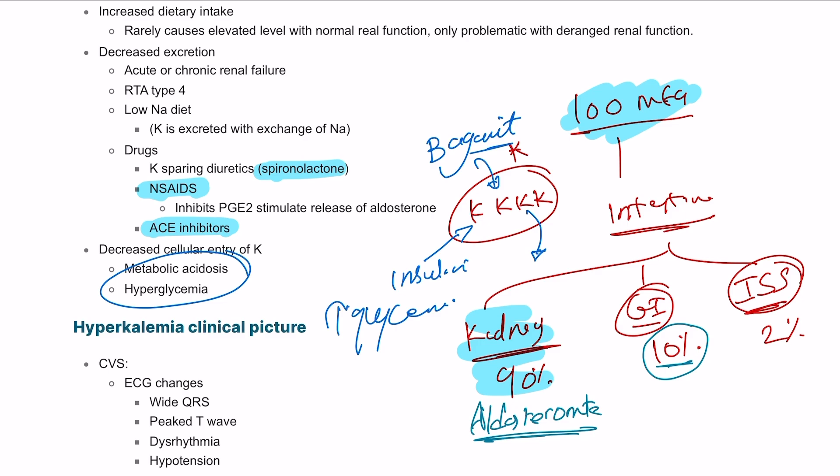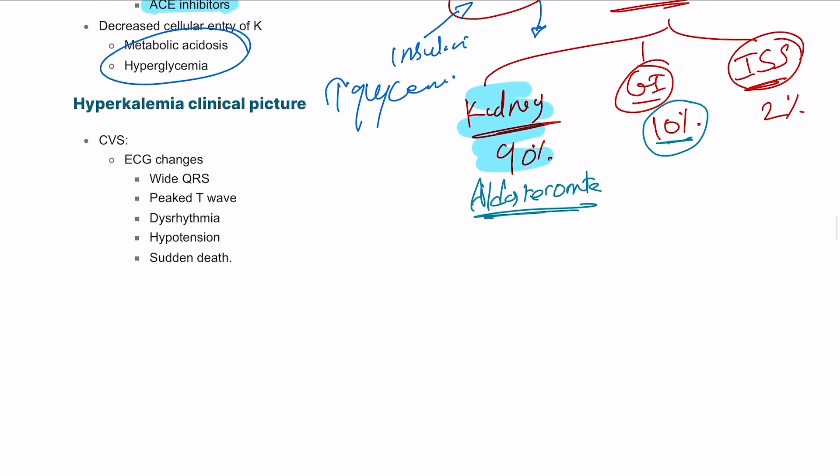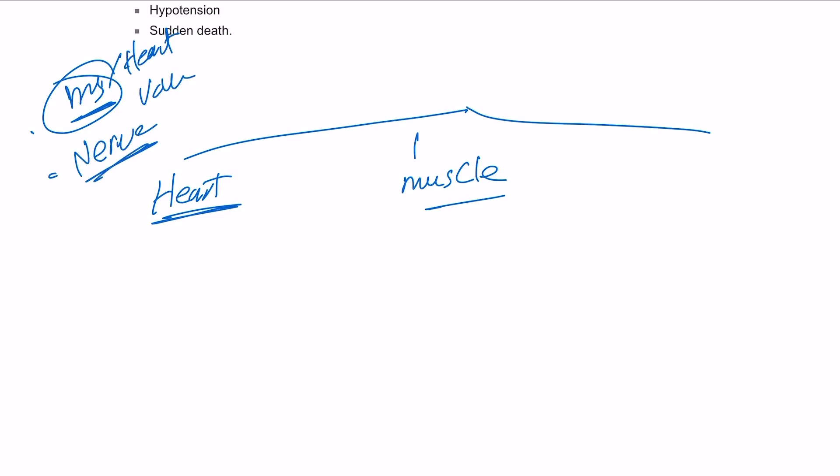The hyperkalemia clinical picture can affect three things in the body: the heart, muscle, and nerves. The function of potassium involves muscle including the heart muscle and voluntary muscle, nerves and nerve conduction, and also the fluid balance in the kidney.